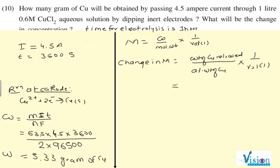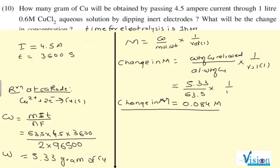Weight of copper released, what is the answer? 5.33. Atomic weight of copper, what is the answer? This gives 0.084.